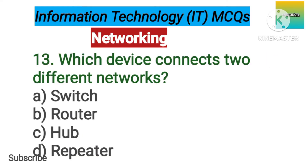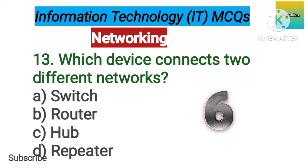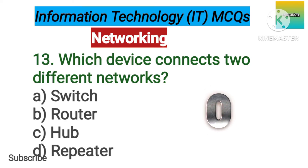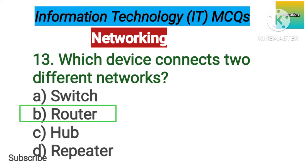Number 13. Which device connects two different networks? Option A: Switch. B: Router. C: Hub. D: Repeater. The correct answer is option B, Router.